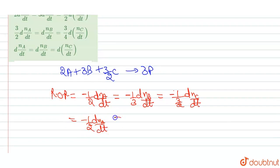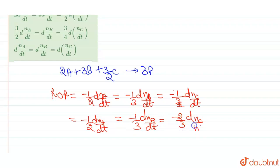The full combined expression is: -1/2 × d[A]/dt = -1/3 × d[B]/dt = -2/3 × d[C]/dt. With the negative signs canceling out on both sides, we can simplify further.